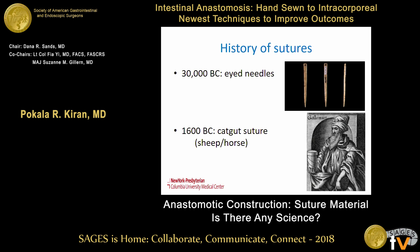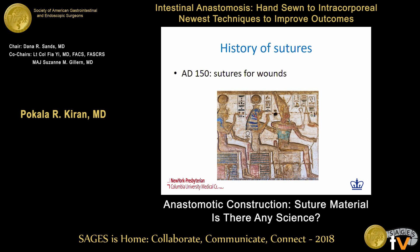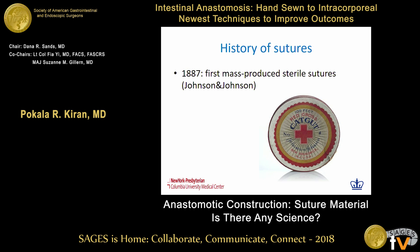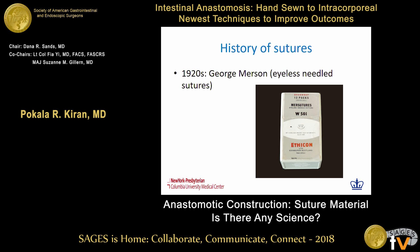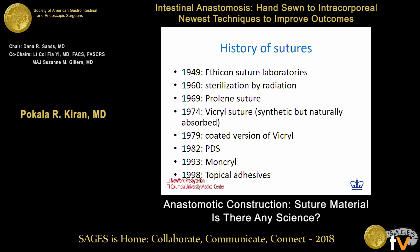Briefly going through the history of sutures: even as far back as 30,000 BC, eyed needles were described. Galen first used catgut suture, which is basically the submucosa of sheep or horse gut. In 1887, the first mass-produced sterile sutures — catgut — were brought into production by Johnson and Johnson. George Merson described eyeless suture needles, which allow us to perform bowel anastomosis with less trauma. By the late 1990s, topical adhesives could also be used.